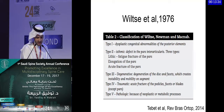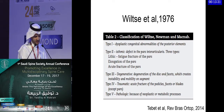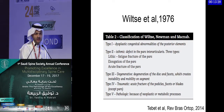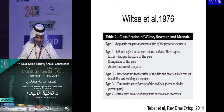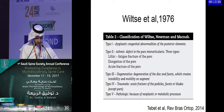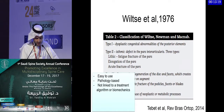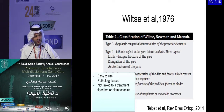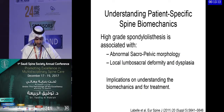The Wiltse classification looked at the kind of pathology — what caused the spondylolisthesis. This classification, although helpful in understanding the pathology, is also not linked to a treatment algorithm, not patient-specific, and not linked to biomechanics.